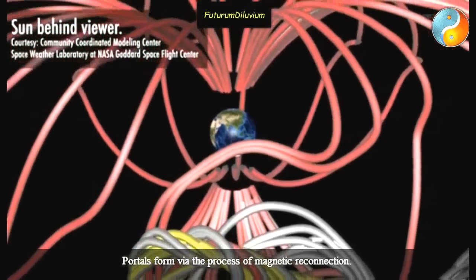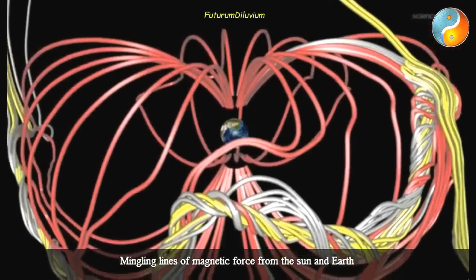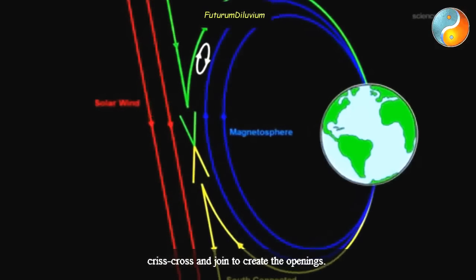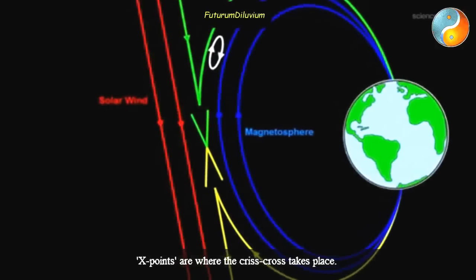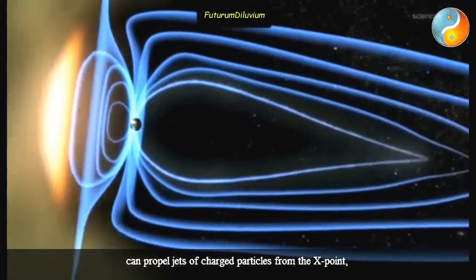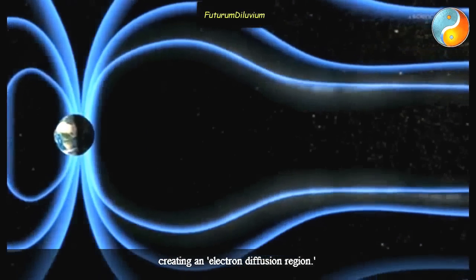Portals form via the process of magnetic reconnection. Mingling lines of magnetic force from the Sun and Earth crisscross and join to create the openings. X-points are where the crisscross takes place. The sudden joining of magnetic fields can propel jets of charged particles from the X-point, creating an electron diffusion region.